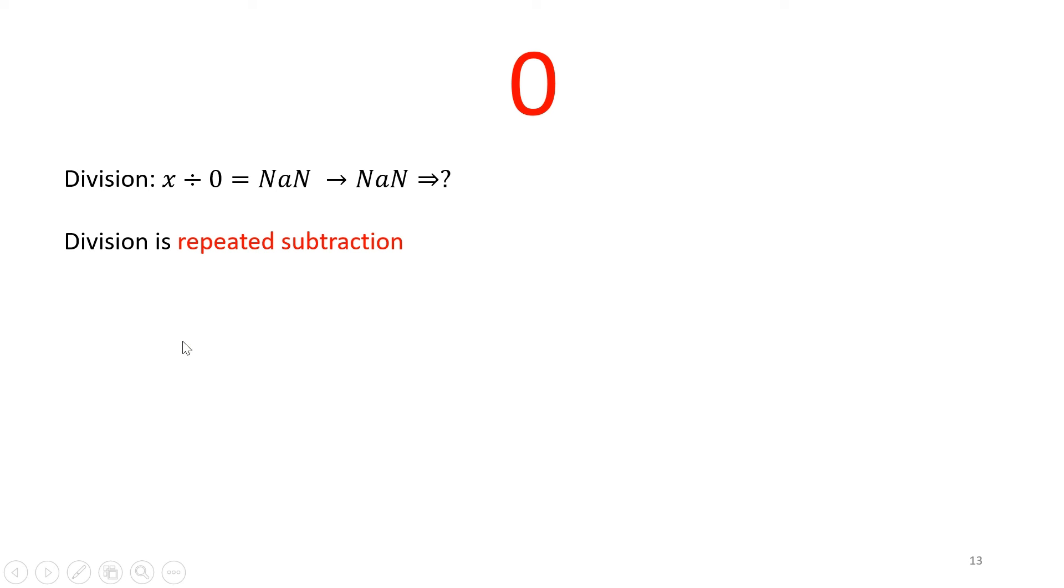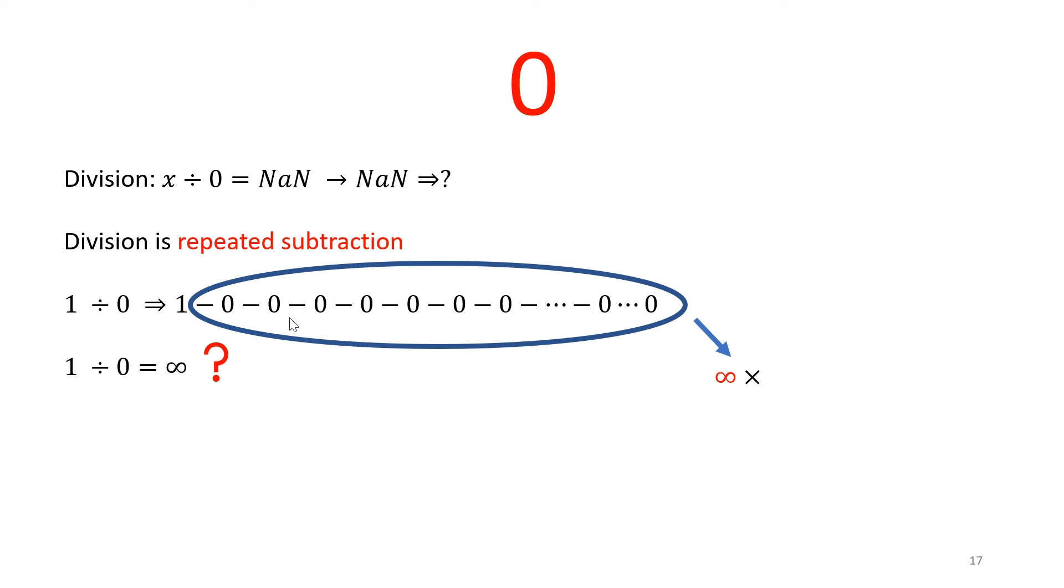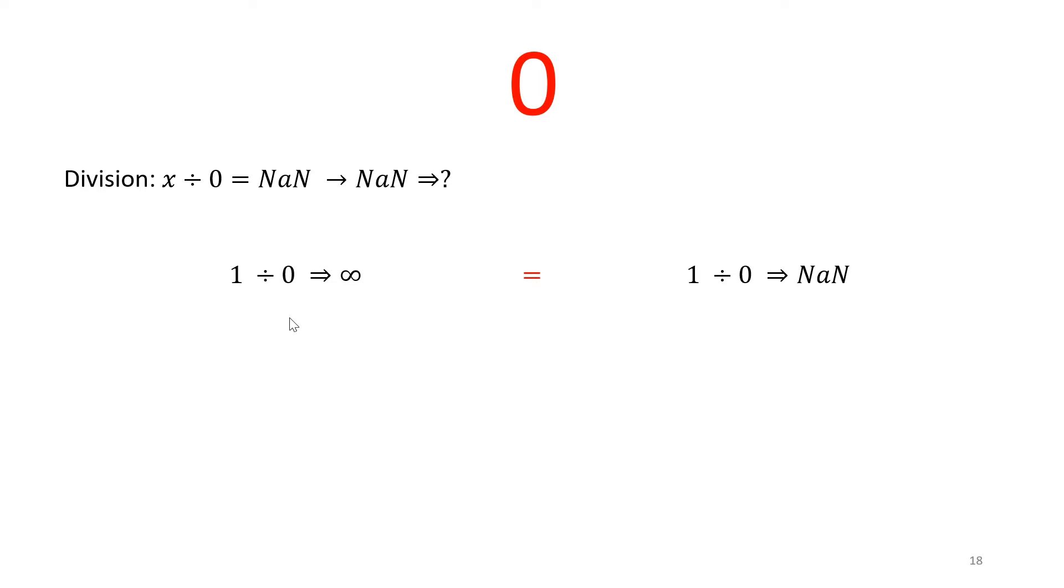Let's do the same thing using 1 and 0. So this time, let's repeatedly subtract 0 from 1. Now, interestingly, unlike last time whenever I was subtracting something, the original number reduced. Here, I can subtract 0 infinity number of times and 1 wouldn't reduce. So does that mean 1 divided by 0 is infinity? Let's think about it for a second.